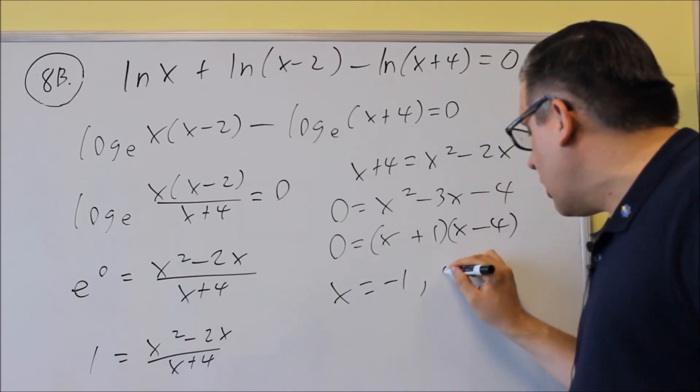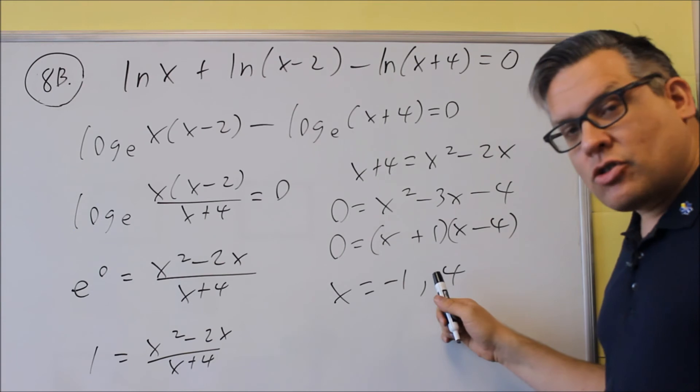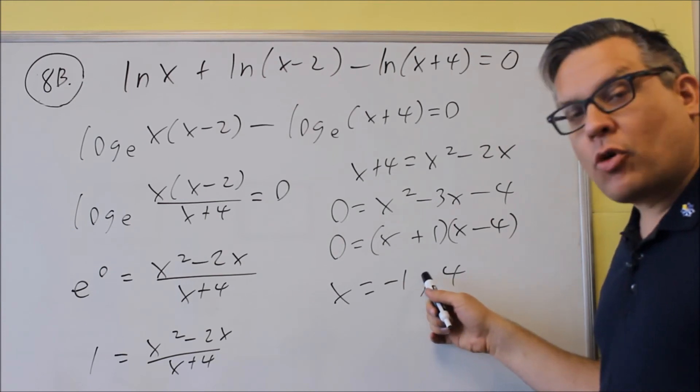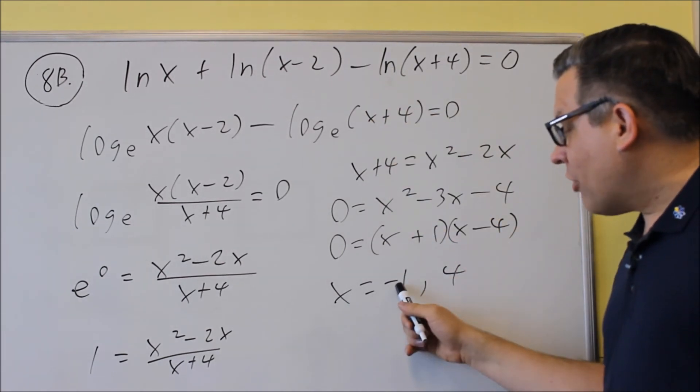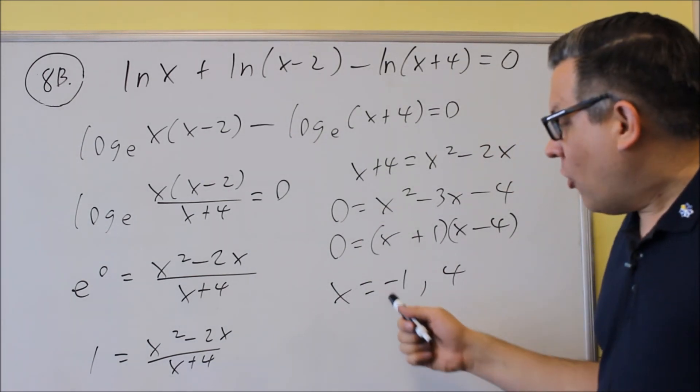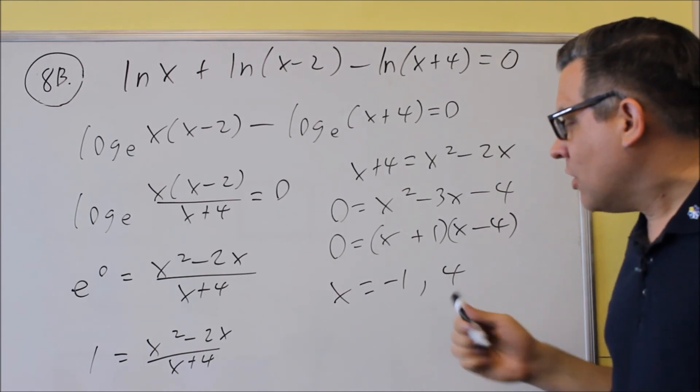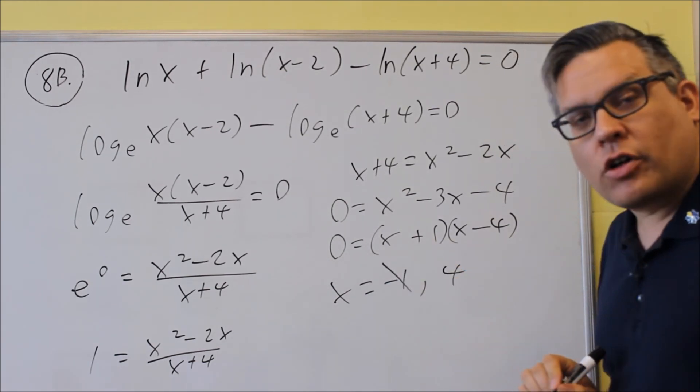We get two answers, negative 1, and we also get positive 4. Now if we take our answers, we've got to make sure they both work in the original one. If I put negative 1 in here, I'm taking natural log of a negative number. Or even if I put it in here, I would have a negative number. So because of that reason, we can't include negative 1 as one of our answers.